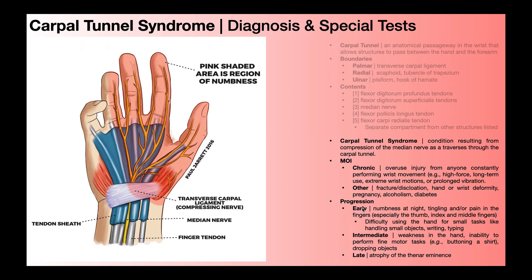At this early stage, we're not going to see atrophy of the thenar eminence. A little bit later in an intermediate stage, you'll start to see more profound weakness in the hand, inability to perform fine motor tasks like buttoning a shirt, and dropping objects more than usual. Then much later in disease progression, you start to see atrophy of the thenar eminence — these muscles on the thumb side are not only weak but actually atrophying and becoming smaller. Note that the hypothenar eminence is going to be spared, as the median nerve has nothing to do with those — they're innervated by a branch of the ulnar nerve.